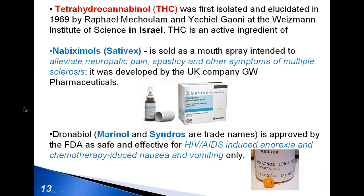Tetrahydrocannabinol is an active ingredient of nabiximols, sold as a mouth spray intended to alleviate neuropathic pain, spasticity, and other symptoms of multiple sclerosis. Dronabinol is used for HIV/AIDS-induced anorexia and chemotherapy-induced nausea and vomiting.